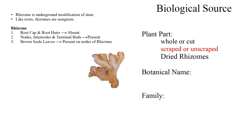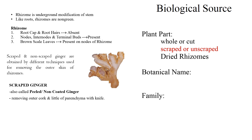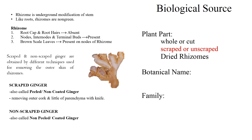Now the point is to know what is scrapped or non-scrapped. Scrapped and non-scrapped ginger are obtained by different techniques used for removing the outer skin of the rhizome. Scrapped ginger is also called peeled ginger or non-coated ginger. It is obtained by removing the outer cork and a little of the parenchyma with a knife. Non-scrapped ginger is also called non-peeled or coated ginger.